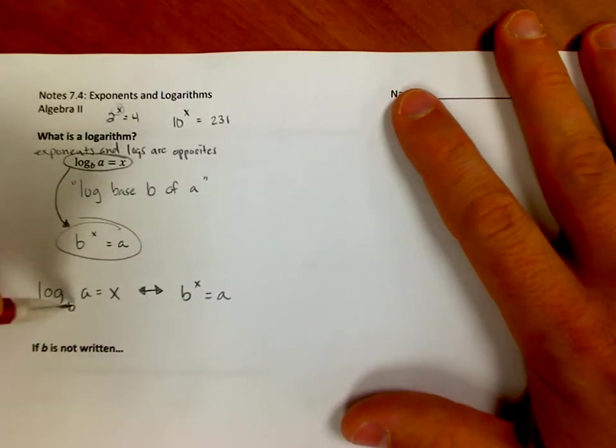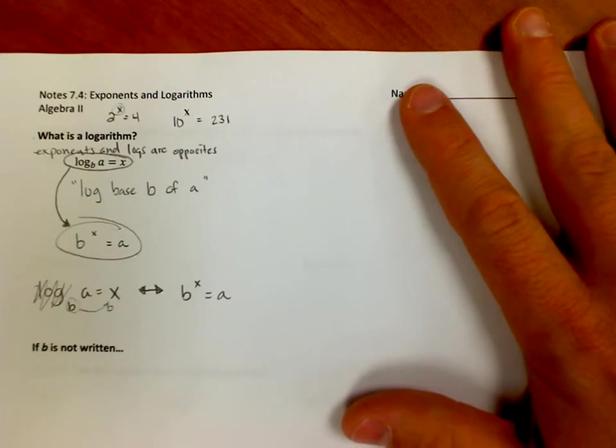In other words, all I have to do is I have to think about it this way: take this guy and shift it over here, put it down here, b to the x, and then just erase this. It's the same exact thing.